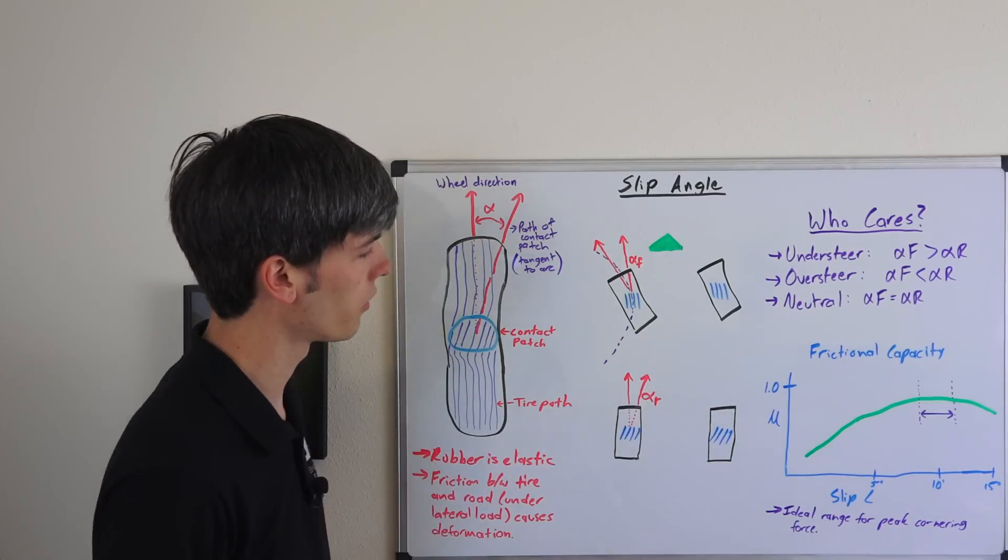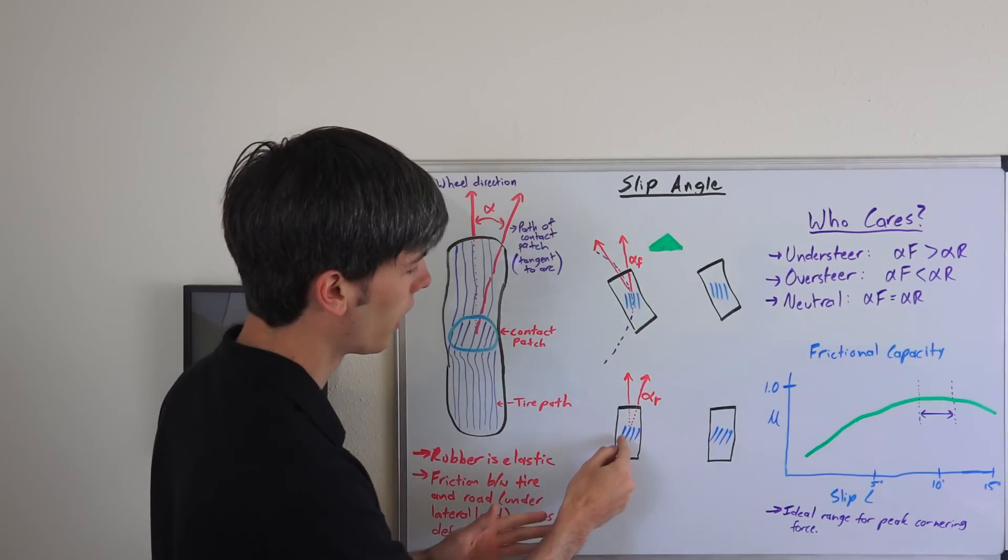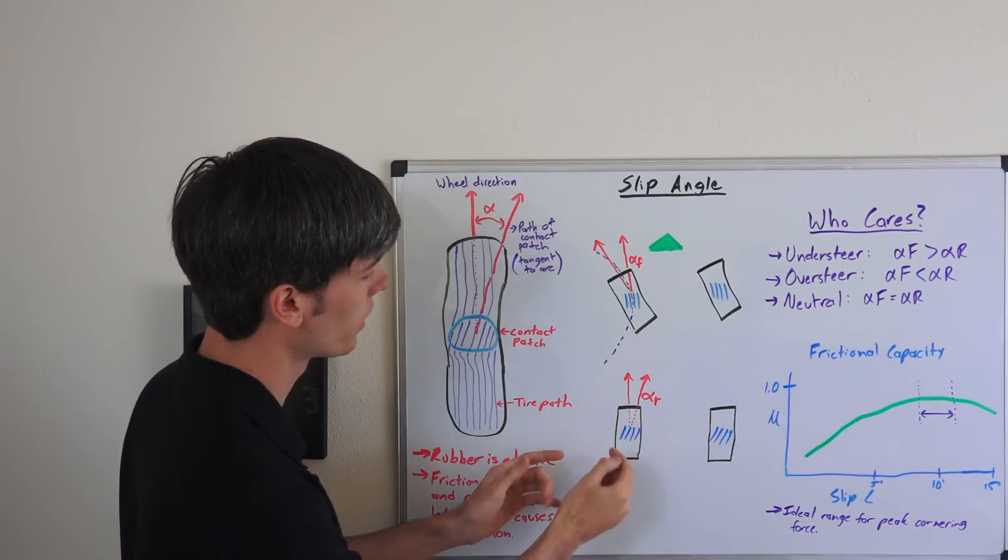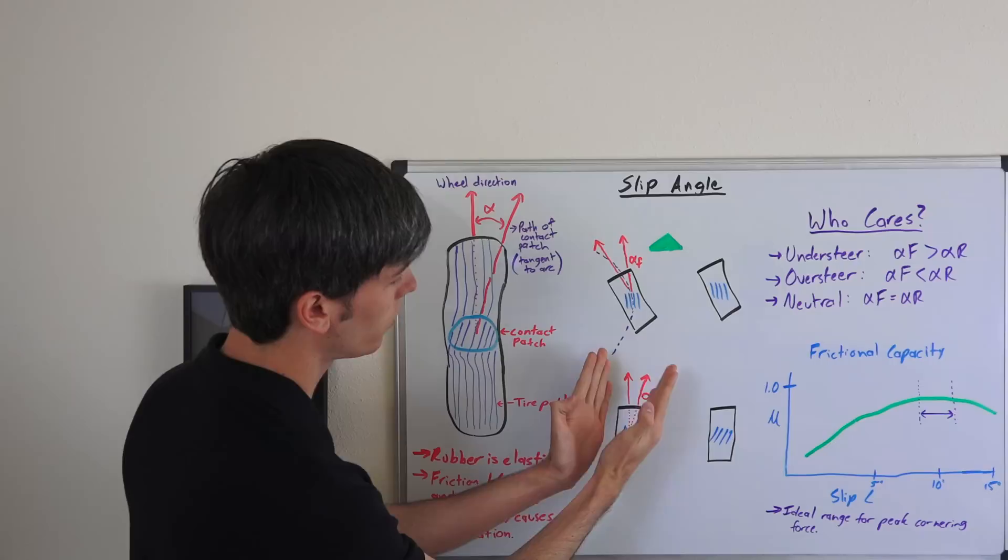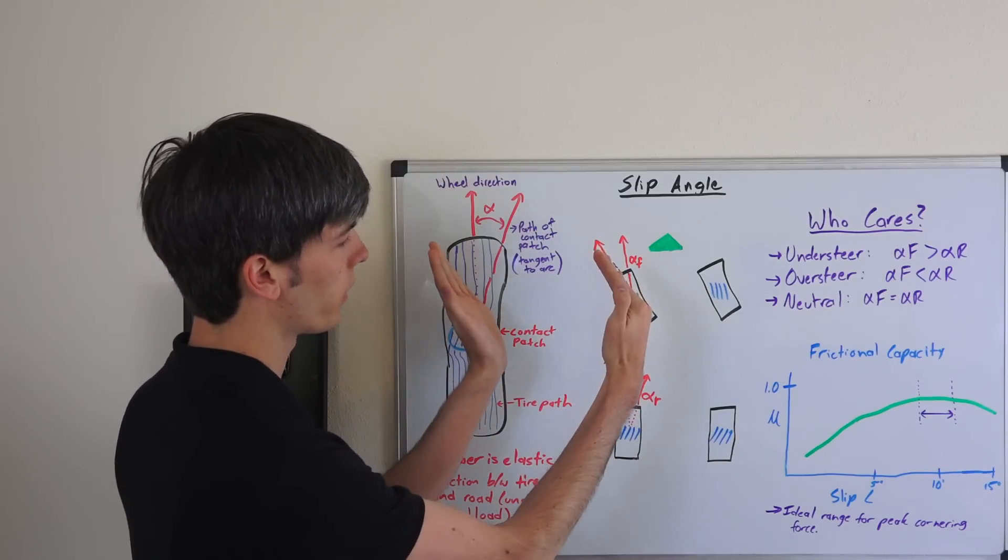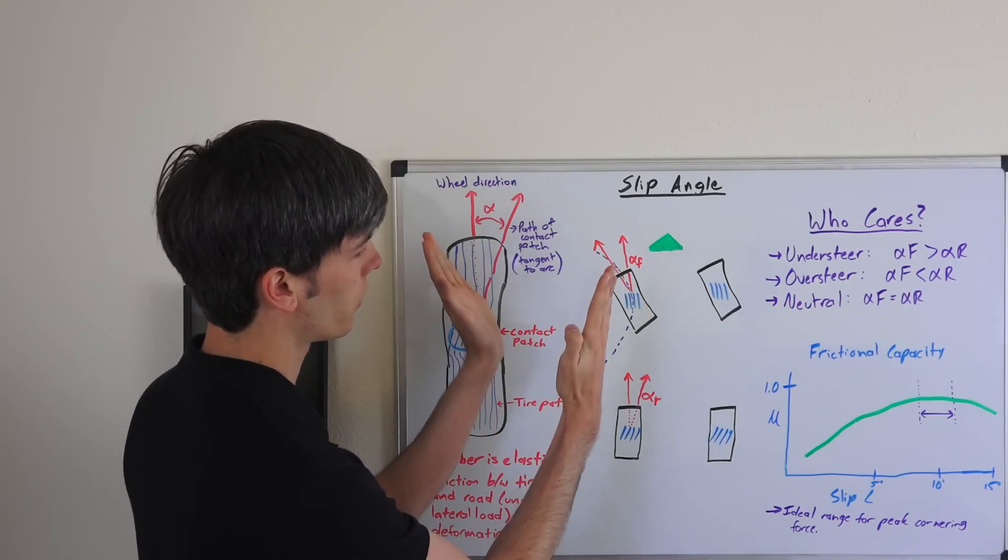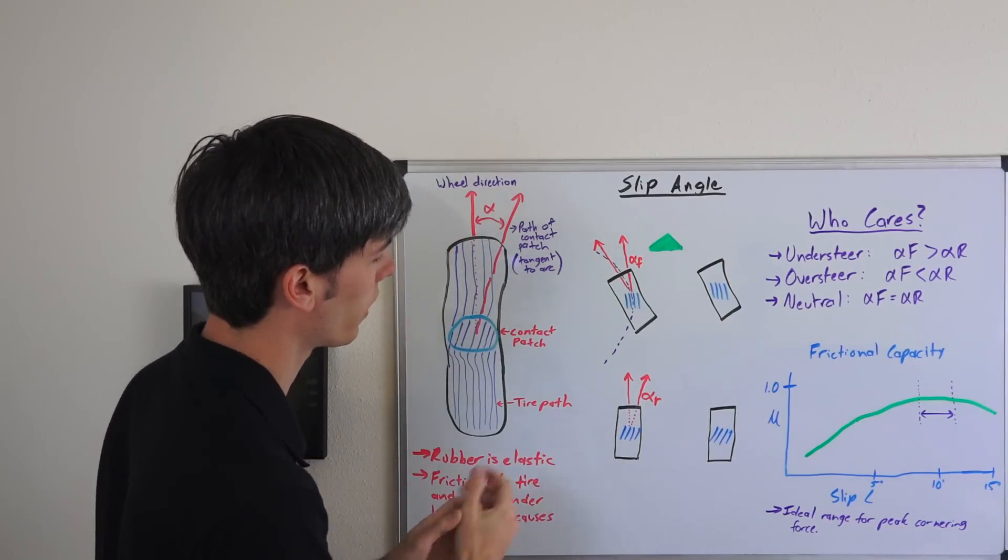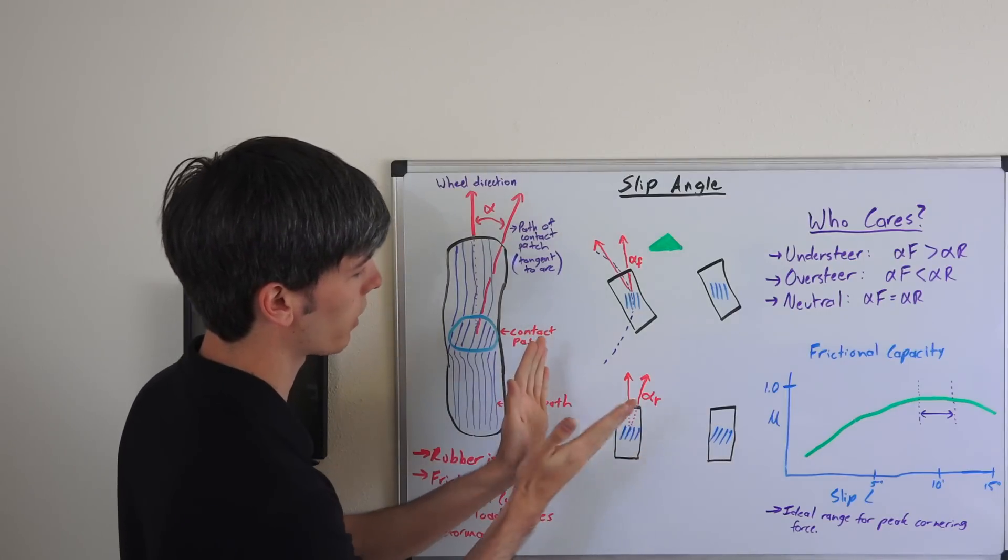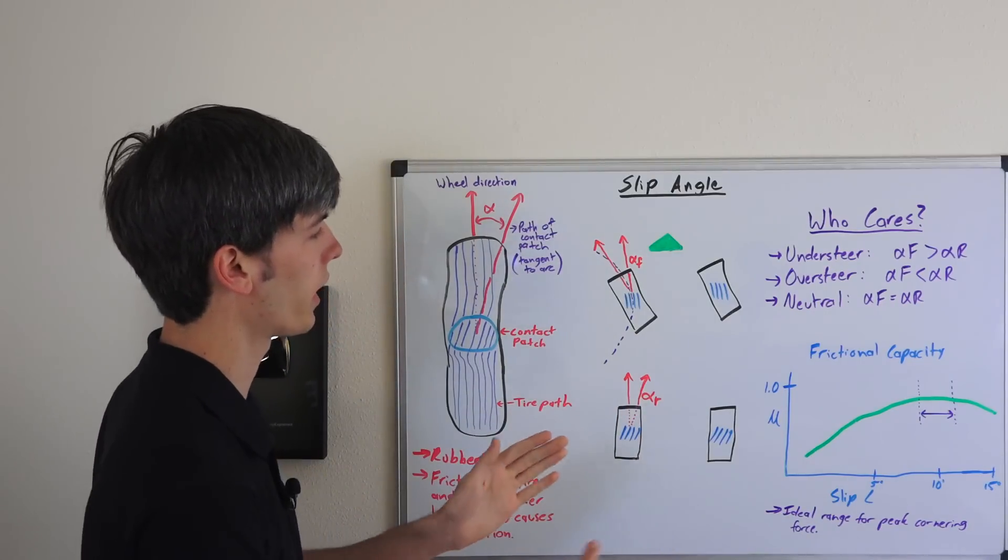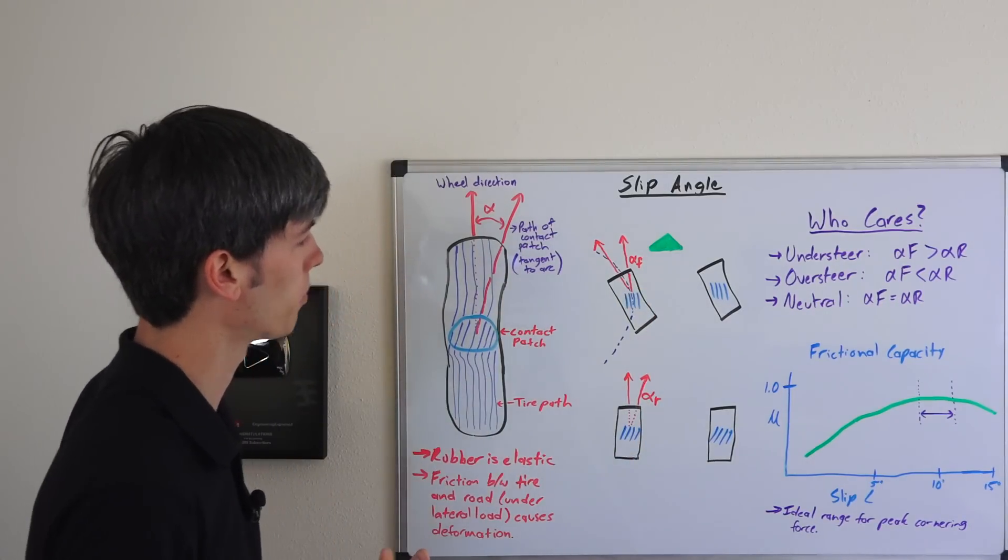So here you can see on a vehicle that's taking that left-hand turn, in blue I've drawn the path of the contact patch and then in red you can see this slip angle at the front and the rear. The wheels are pointing this direction, the front of the car is this direction, and then the slip angle is somewhere in between that for these front tires. For the rear tires, the contact patch is going to be pointed a little bit outside of the direction the car is pointed.